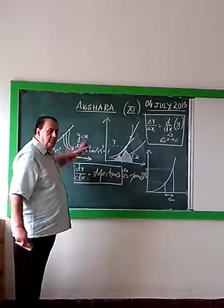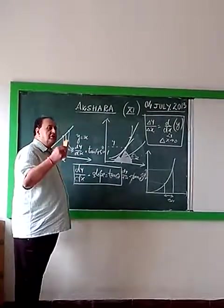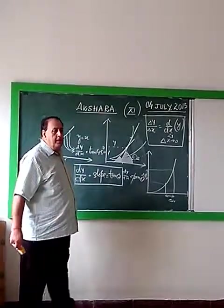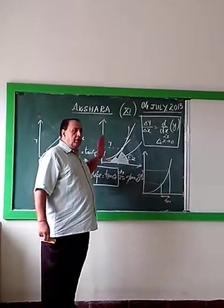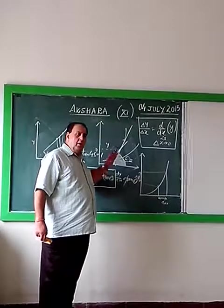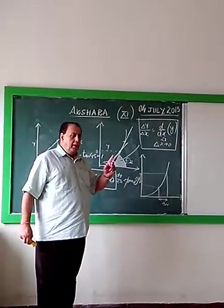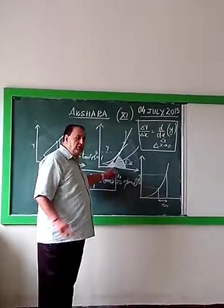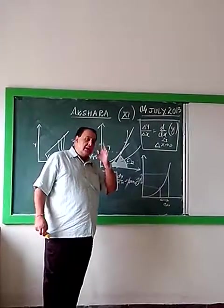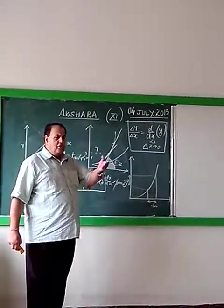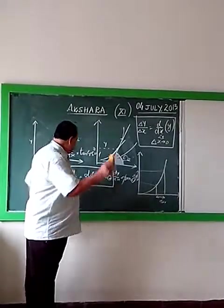Concept of tangent: if you want to know the rate of change graphically at any point of a function, draw a straight line which should be a tangent at that point, measure the angle that it makes with the positive direction of x-axis, and take tangent of that - that is the slope.